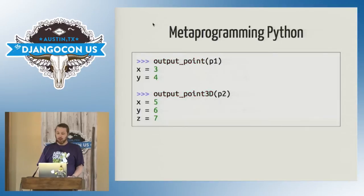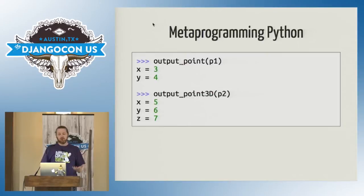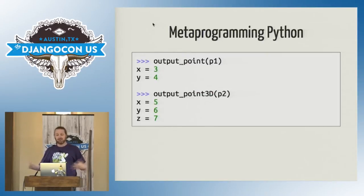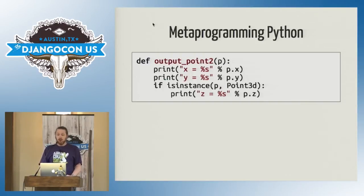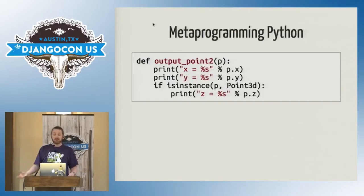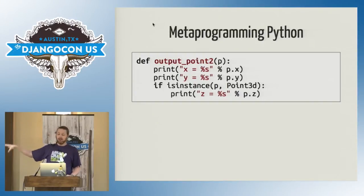You write output point for a two-dimensional point and output point for a three-dimensional point — nothing too challenging there. And when you run them, you get exactly what you'd expect. But what you really want is a single method that will take a point of any type and output it appropriately. That's easy enough to write. If you're coming from a language like C++ that doesn't have metaprogramming tools, or Java, which has metaprogramming tools but doesn't encourage you to use them much, you might be inclined to do a class check.